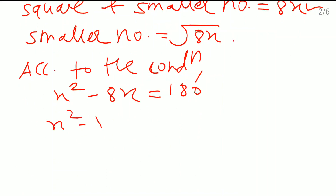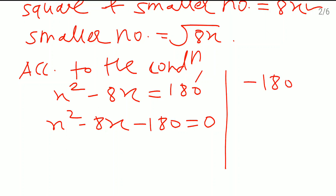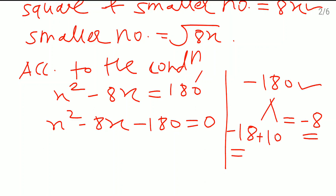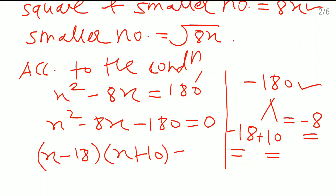So, x squared minus 8x minus 180 equals 0. This is the quadratic equation in standard form. Now we need to find two factors whose product is minus 180 and sum is minus 8. We can use minus 18 and plus 10: their sum is minus 8 and product is minus 180. Since the coefficient of x squared is 1, the factors are directly (x minus 18) and (x plus 10) equals 0.